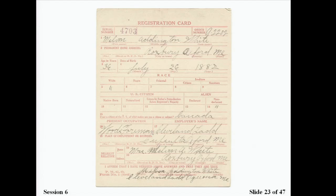This next example card is of a non-citizen alien who was non-declarant. He was probably what they would call an allied alien because he lived in Canada, and we were allies with France at the time. Notably, he has a handwritten note on the bottom of the card.